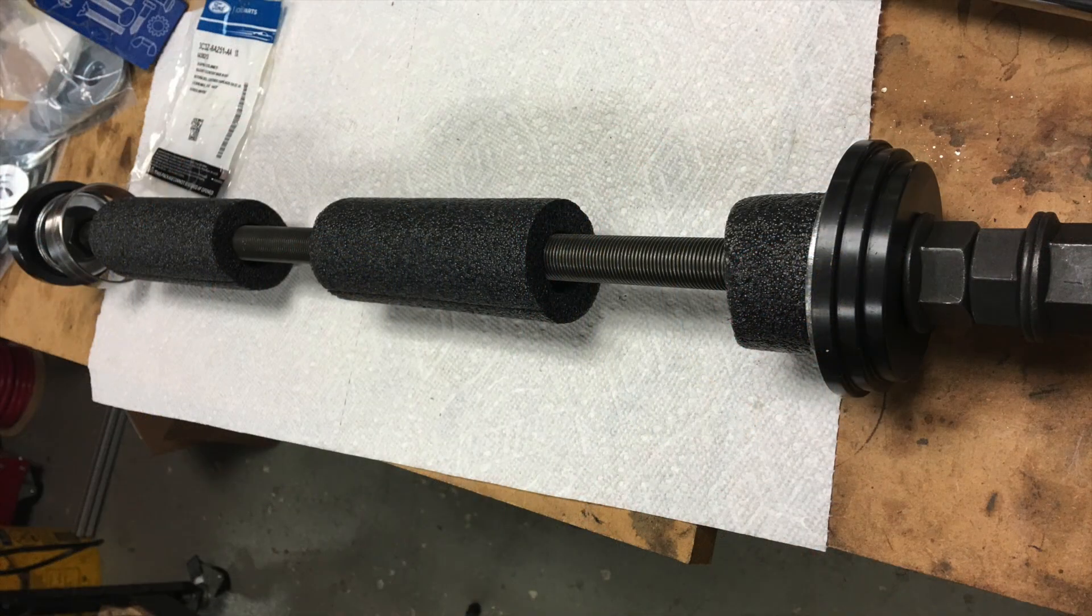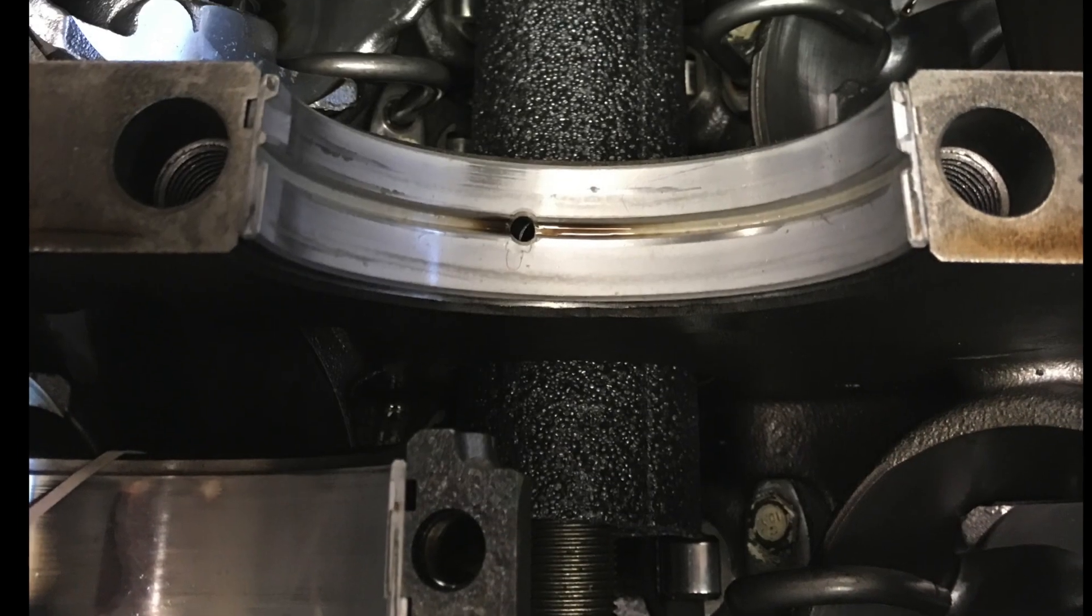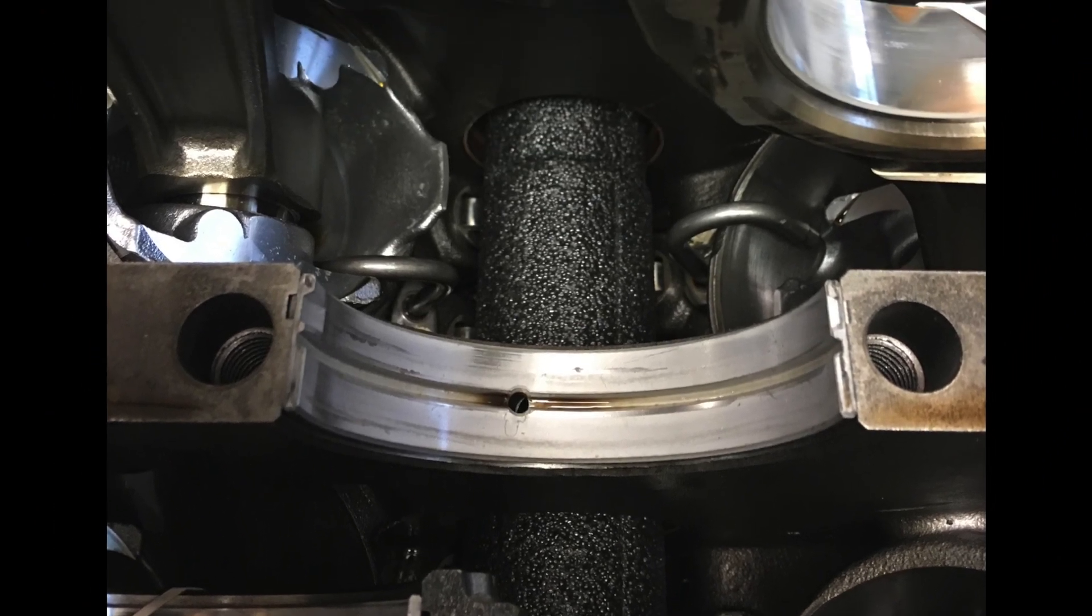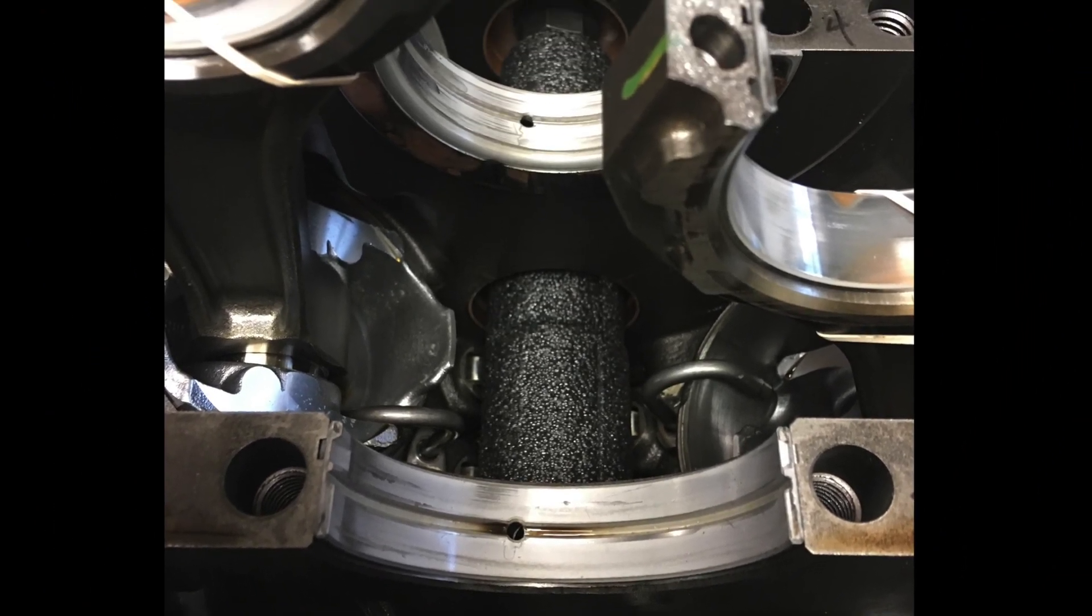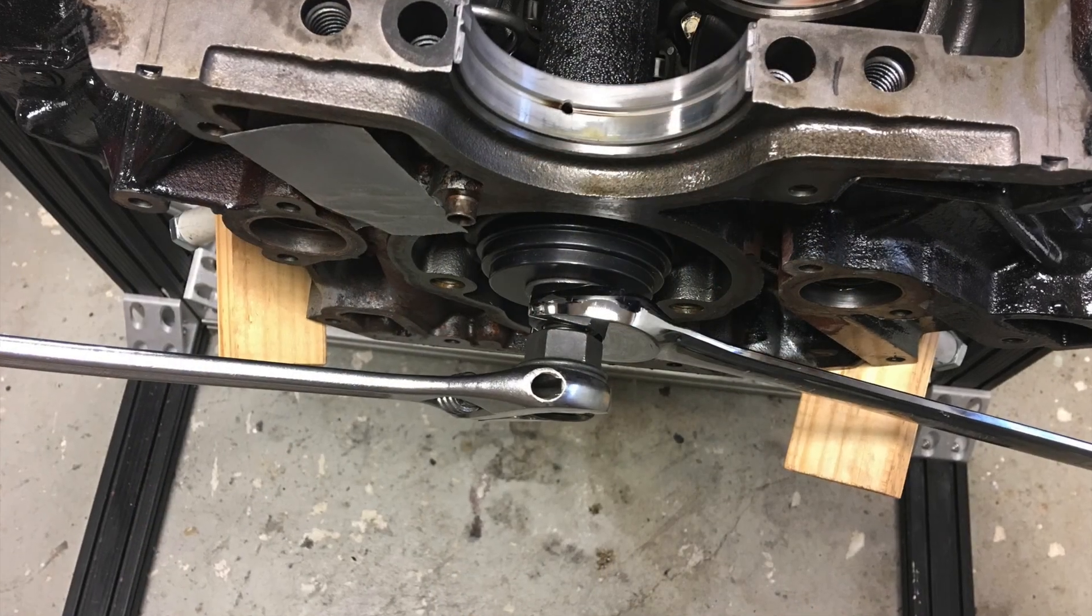This tool setup was typical for what I've done in the past to install cam bearings. I use foam pipe insulator to protect from the jack screw threads as a precaution. The washer pack is installed at the back of the motor, ready to pull through the bearing shell.